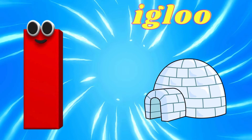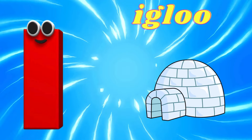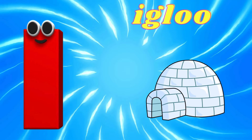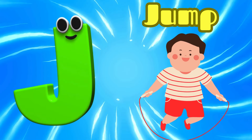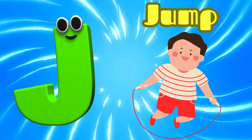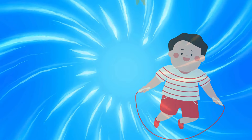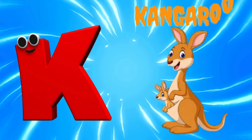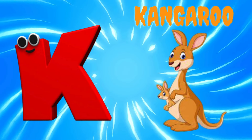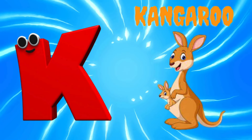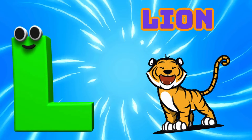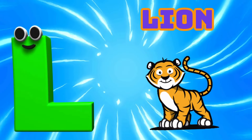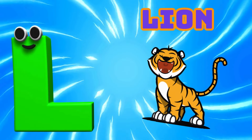I is for Igloo, I-I-Igloo. J is for Jump, J-J-Jump. K is for Kangaroo, K-K-Kangaroo. L is for Lion, L-L-Lion.